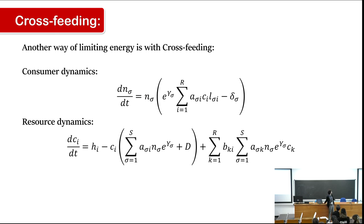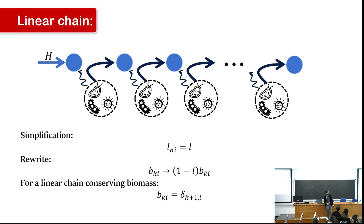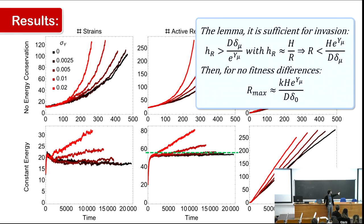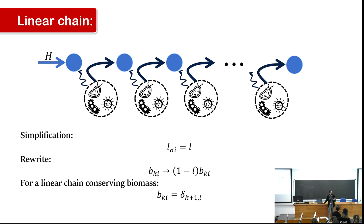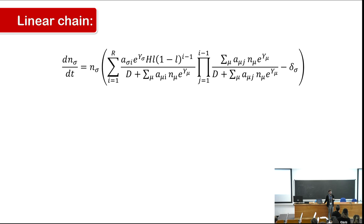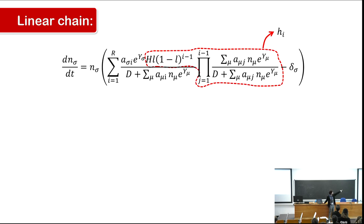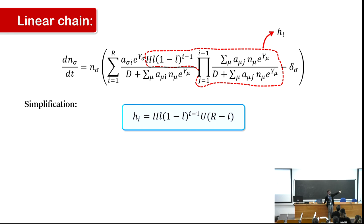We simplify using a linear chain of resources: one resource is converted into the next; bugs consume a resource and secrete the next one. The final equation is ugly but has a term that looks like an inflow rate, exactly as in the previous equations. We further simplify by assuming resource quality decays exponentially along the chain, and energy is still limited — summing over all infinite resources gives a finite energy.